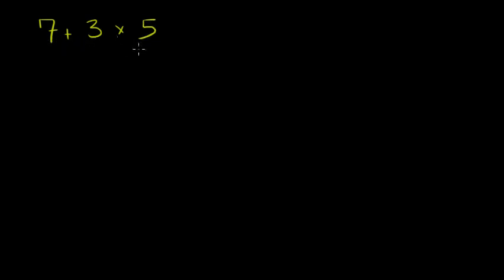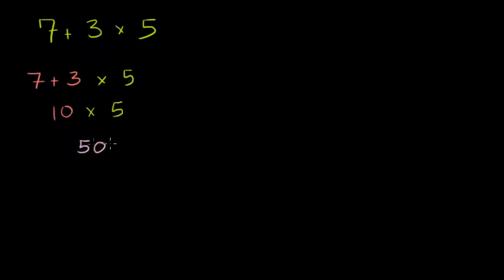You could just read it left to right. You could say, let me just take 7 plus 3, and then multiply that times 5. And 7 plus 3 is 10, and then you multiply that by 5 — 10 times 5 would get you 50. So that's one way you would interpret it if we didn't agree on an order of operations — maybe the natural way, just going left to right.